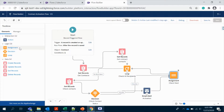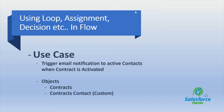I'm going to use one specific use case to trigger the notification. For this video, the use case is: I need to trigger the email notification only to the active contacts when the contract is activated. I'm going to use two objects here — one is Contract and another one is Contract Contacts, which is my custom object.